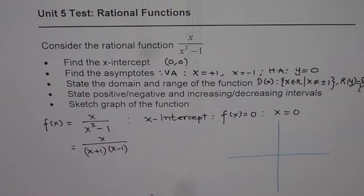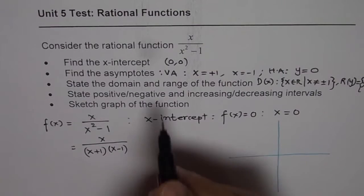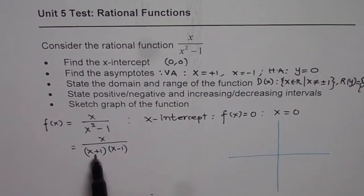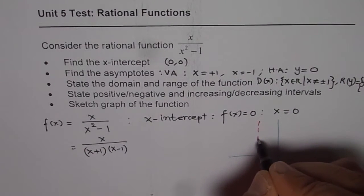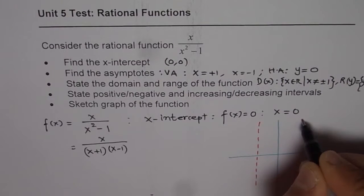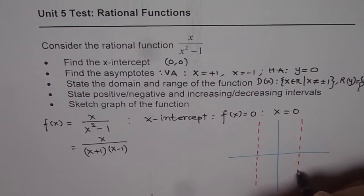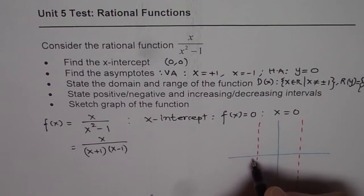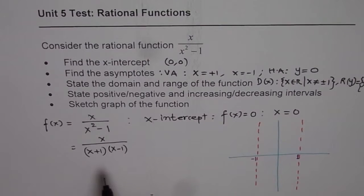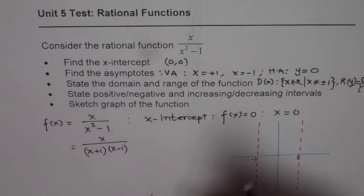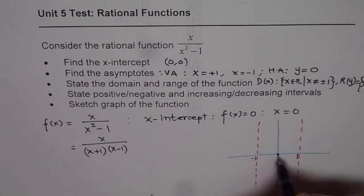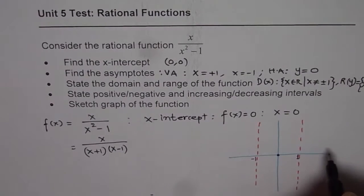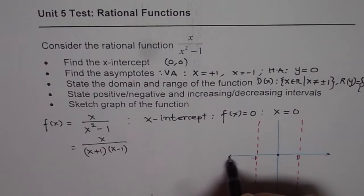Normally in a test you will be given a grid for an accurate sketch. The denominator x squared minus 1 equals 0 at x equals plus 1 and minus 1, giving two vertical asymptotes. The x-intercept is at the origin, so the graph passes through the origin. The horizontal asymptote is the x-axis.